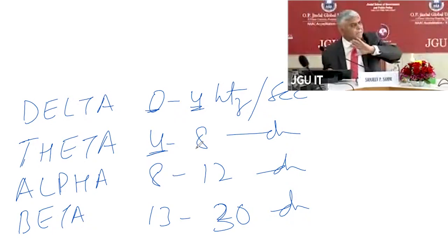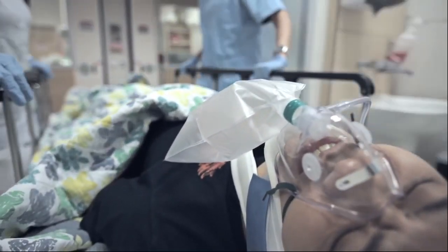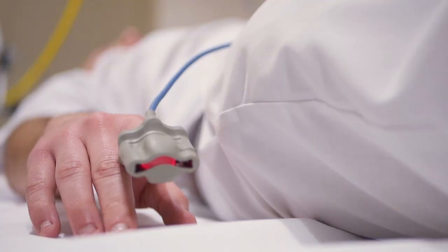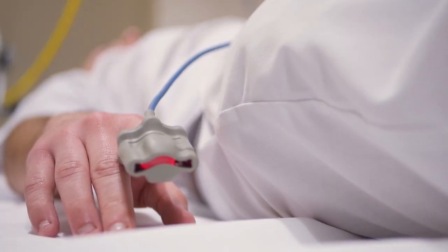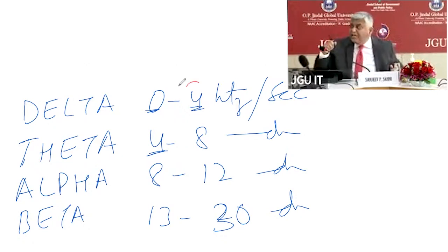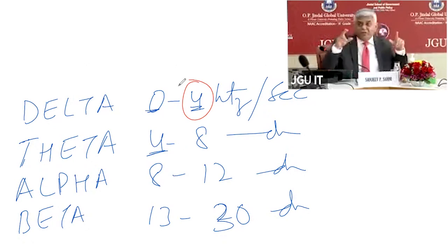Now Delta is a completely coma state - whenever you are brain dead or whenever you go into a coma when you are not aware, a non-awareness point. But I want to tell you, number 4 is a deep sleep.